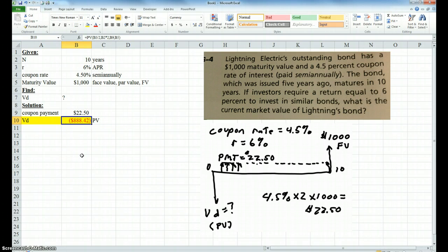So that's valued at—that's the answer. It's valued at what I should pay for that bond if I require a 6% return. I should pay $888.42 or less. If I paid less, then I'm going to get a higher return.